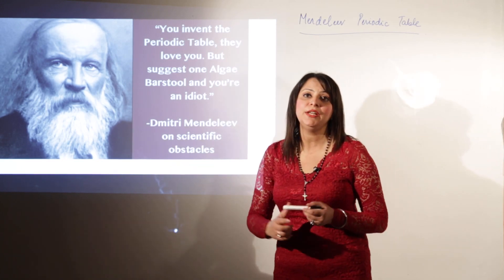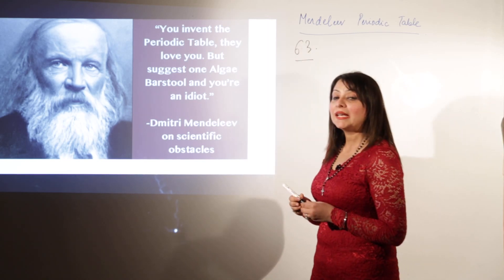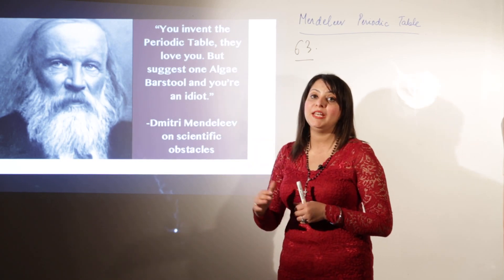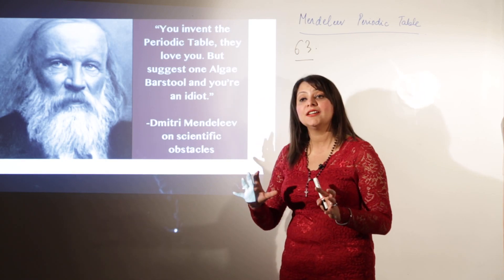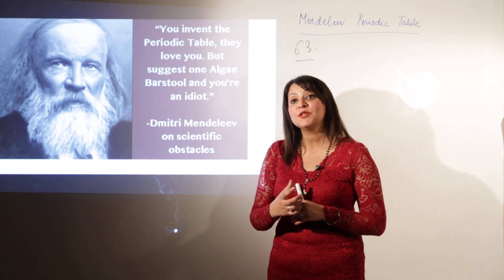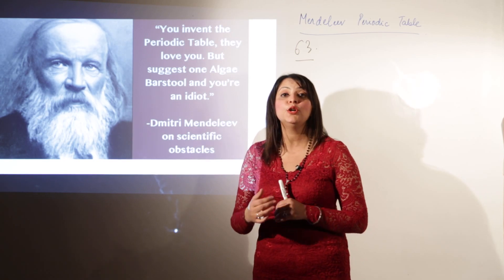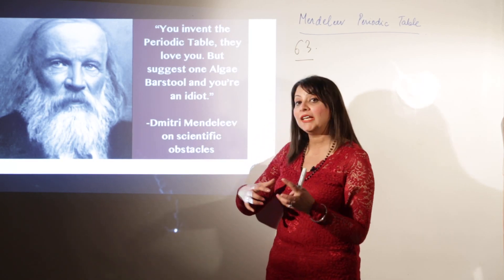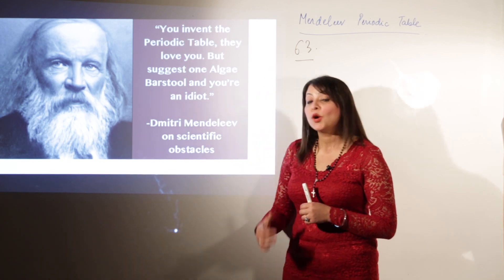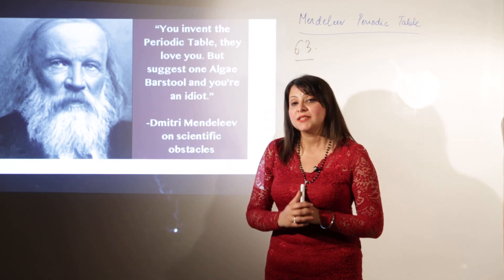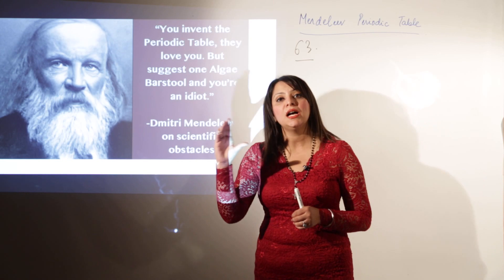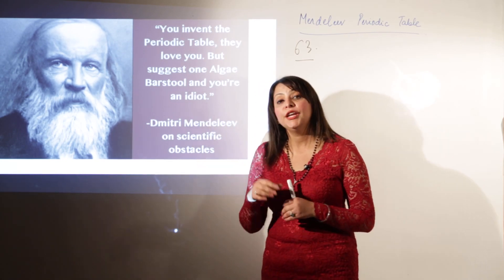Mendeleev was able to successfully classify 63 elements, because when he classified the elements, 63 elements were known. He arranged those 63 elements in a tabular form which was clearly understood by all. He even made a very bold prediction — he predicted the existence of certain elements that were not discovered at that moment. To do this classification, he took 63 cards.